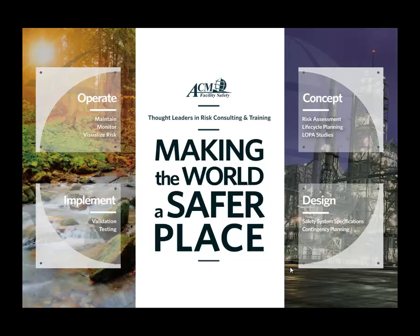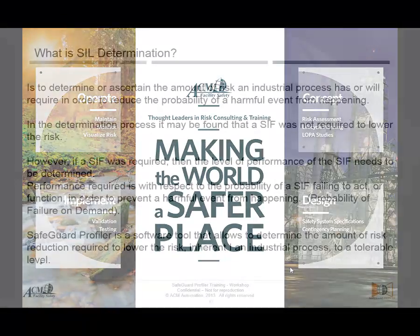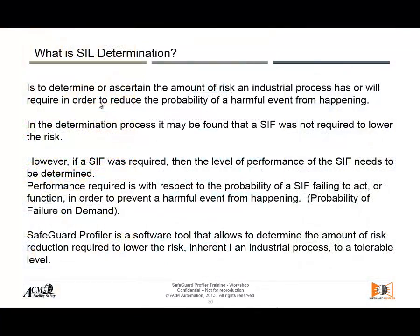What is SIL determination? It is to determine or find out the amount of risk in a process, unit, or specific scenario. Several scenarios that have the same consequence and severity will require us to reduce the probability of a harmful event from happening. We then determine whether we need a safety implemented function or not.